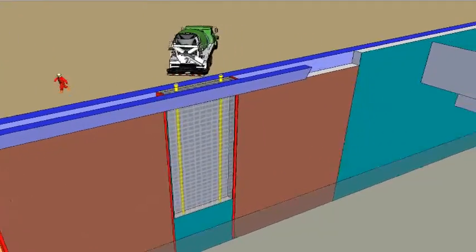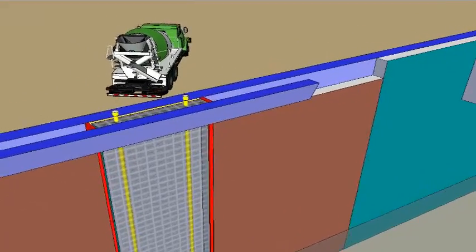Concrete the excavated panel with the placed reinforcement cage using two tremie pipes with hoppers.